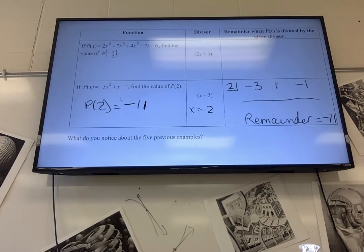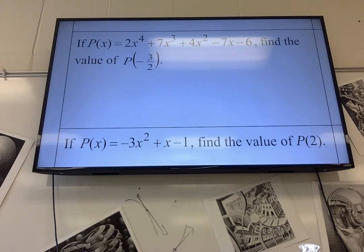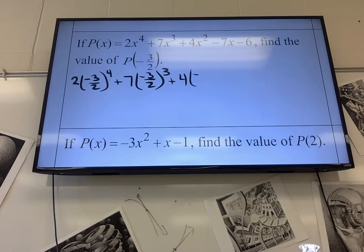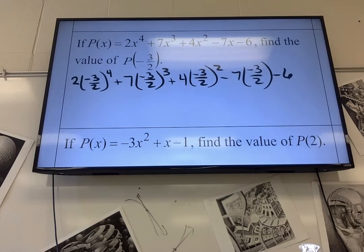This one I let us skip. But, if I plug in negative 3 over 2, so I have 2 times negative 3 over 2 to the 4th plus 7 times negative 3 over 2 cubed. So, it's 4 times negative 3 over 2 squared minus 7 times negative 3 over 2 minus 6. Yuck.